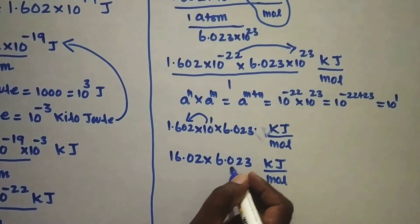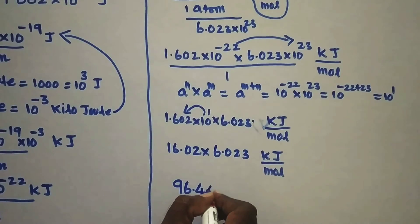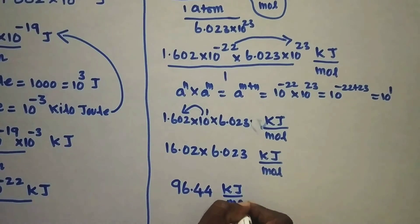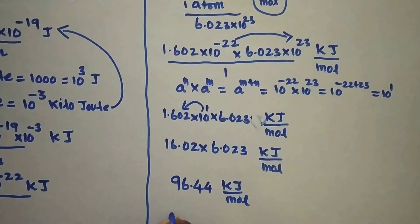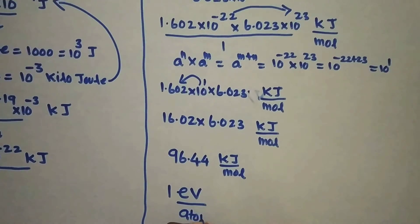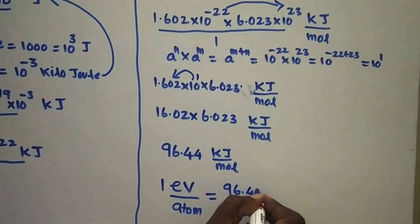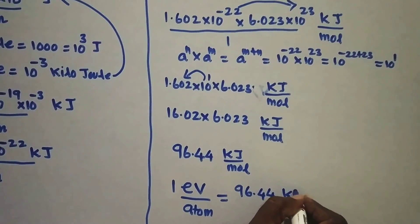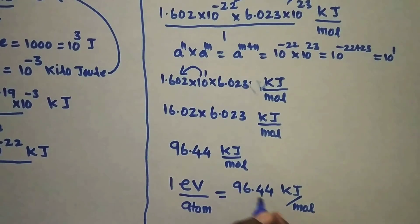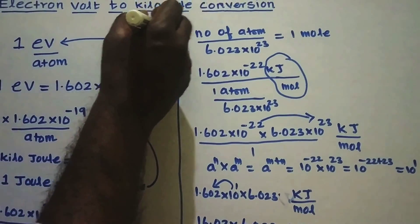Multiplying these two values gives 96.44 kilojoule per mole. So it is well known that 1 electron volt per atom is equal to 96.44 kilojoule per mole. This is how to convert electron volt to kilojoule per mole.